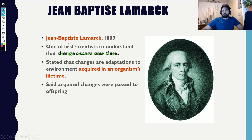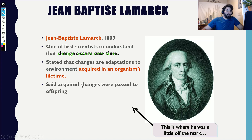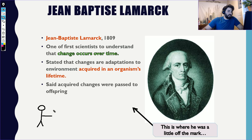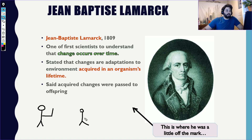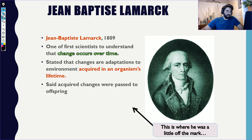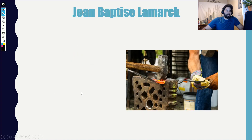But he also came up with something else that was wrong. He came up with the idea that species acquired traits over their lifetime. So he assumed that if you were born with two arms and two legs and you lost your left arm, then had a baby, that baby would be born without a left arm. You acquired the trait of losing a left arm and passed it on — and that's just flat out wrong.